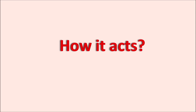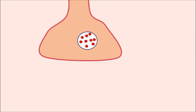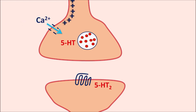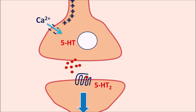One important neurotransmitter within the CNS is serotonin (5-HT). When an action potential reaches the presynaptic nerve terminal, calcium enters the terminal, producing exocytosis and release of 5-HT. This 5-HT acts on postsynaptic 5-HT2 receptors to produce postsynaptic excitation.